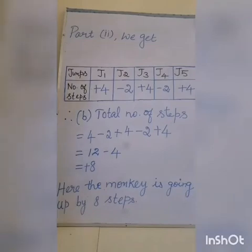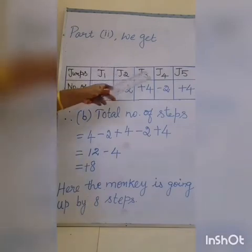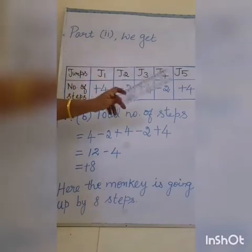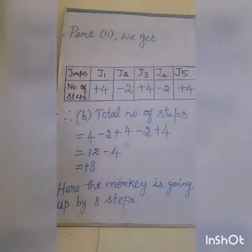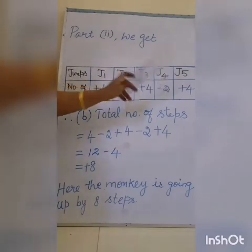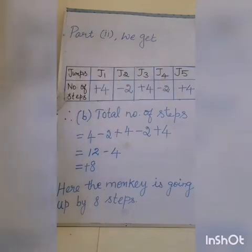4 minus 2 plus 4 minus 2 plus 4 equals 8. We get plus 8. Is this steps up or steps down? That is the question. So Part 2, we get. How many jumps did the monkey do? 5 jumps. So J1, J2, J3, J4, J5. In the previous sum, J was 11 because Part 1 answer is 11 jumps. But Part 2 answer is 5 jumps only that the monkey did. So number of steps - step up, put the positive sign. Step down, put the negative sign.